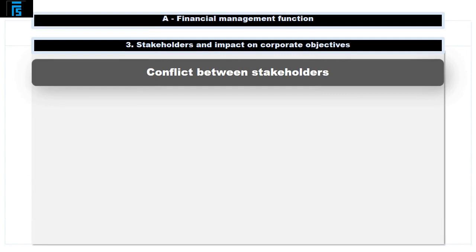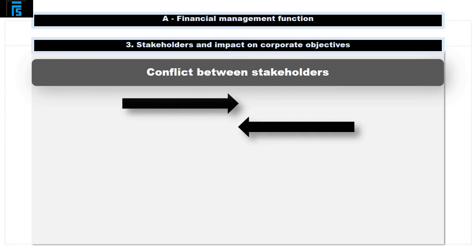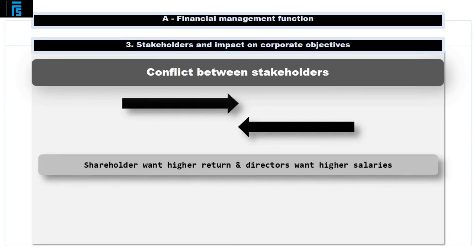There can be conflict between the stakeholders of an organisation because their objectives can be competing and it is not possible to meet all the stakeholders' objectives. For example, between shareholders and directors: shareholders want to maximise their investment and may not agree with the directors' methods or their salaries, which are decided by an independent remuneration committee. We will look at this conflict in the next slide.